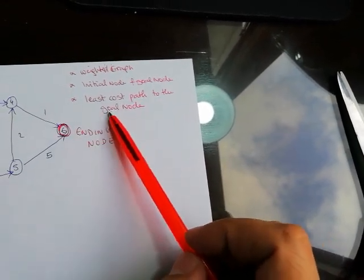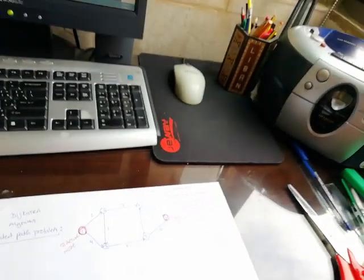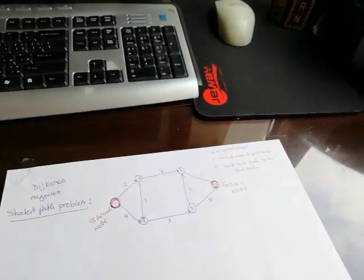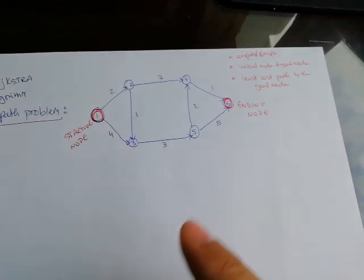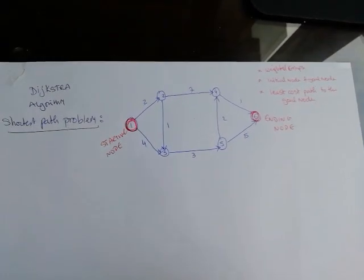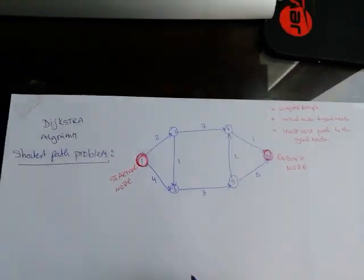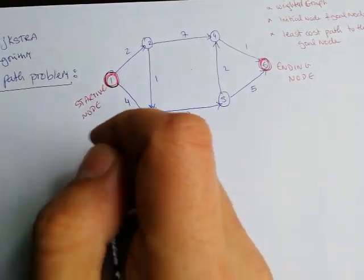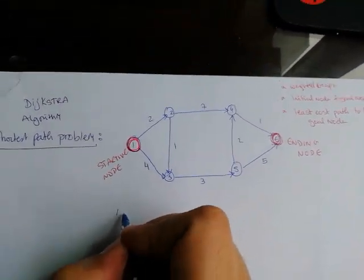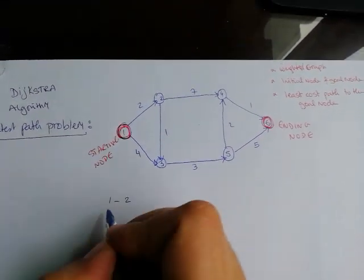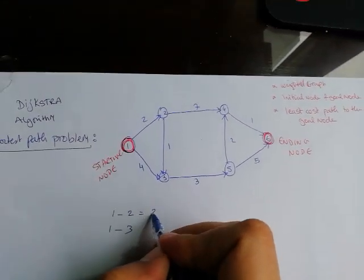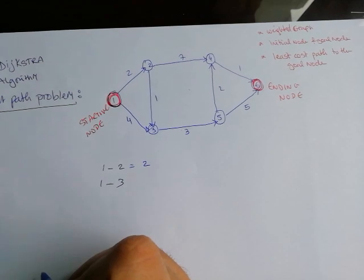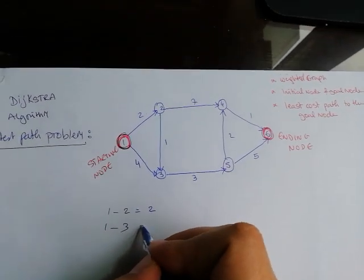In this example, I'm going to start solving Dijkstra's shortest path problem. We start by one. We can go from one to two or one to three. The distance from one to two is two, and from one to three is four, so we select the easiest one for us: one to two.